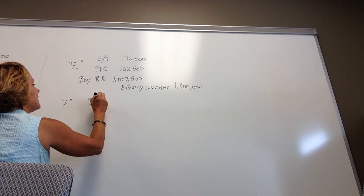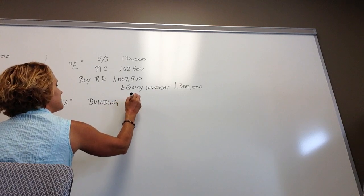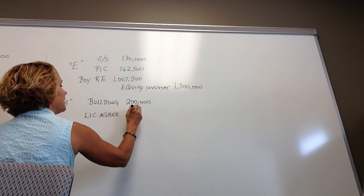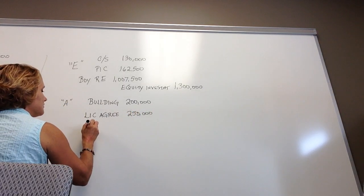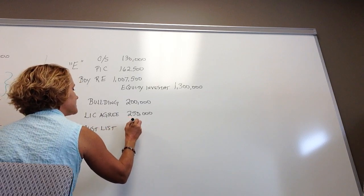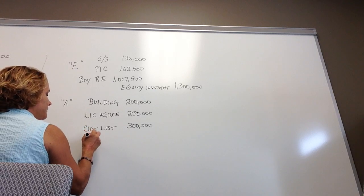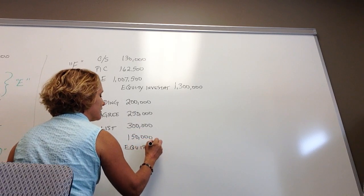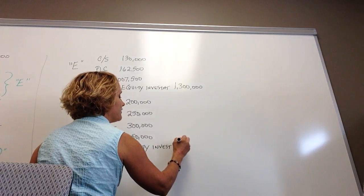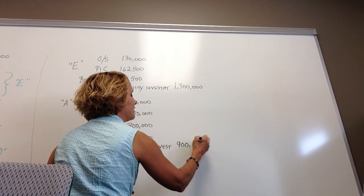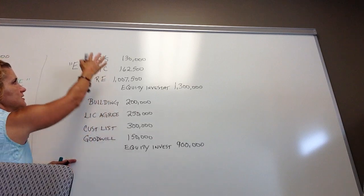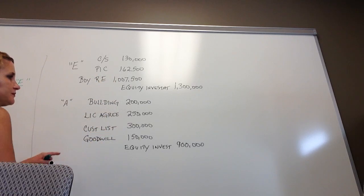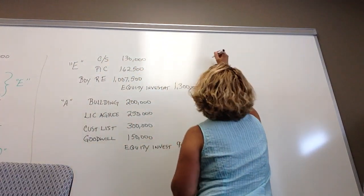The A entry records the AAP assets. We increase the building by $200,000, record the license agreement for $250,000, record the customer list for $300,000, and record goodwill for $150,000. The credit offsets the equity investment for $900,000. So we have two credits to the equity investment: one eliminating the sub's equity and one for the AAP assets.